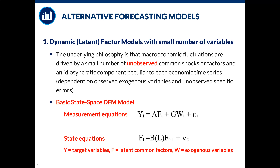In the dynamic latent factor model, the underlying philosophy is that macroeconomic fluctuations are driven by a small number of unobserved common shocks or factors and an idiosyncratic component peculiar to each economic time series, dependent on observed exogenous variables W in the measurement equation, and unobserved specific errors epsilon-t. Capital F represents the unobserved common shocks. The second group of equations explains the behavior of these unobserved common factors.